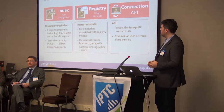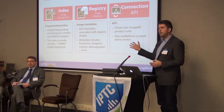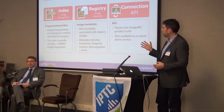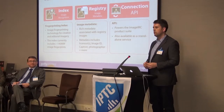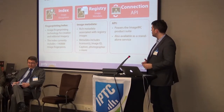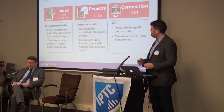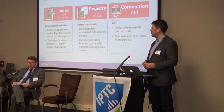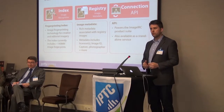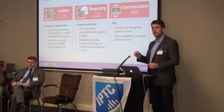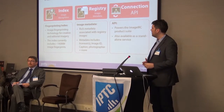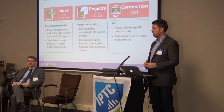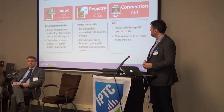The idea is that in order to index images, we fingerprint them and store these fingerprints. This is proprietary technology, and it works quite well and swiftly. At the moment, we have about 140 million image fingerprints stored — that is more than Getty Images has own photographs, and that is something I'll get back to later in the presentation.